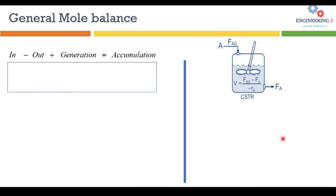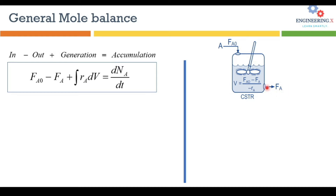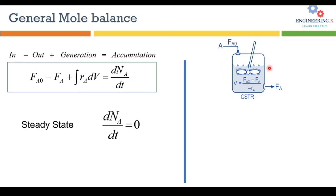Let's derive the mole balance equation. We already derived it for the plug flow reactor — the general equation is the same: input minus output plus generation equals accumulation. If we consider A as the reactant, FA0 is the molar flow rate entering the reactor, FA is the molar flow rate of reactant leaving the reactor, the generation term equals the rate of reaction multiplied by the integral of volume, and the accumulation term is the total change in moles of species A with respect to time. At steady state, accumulation equals zero.